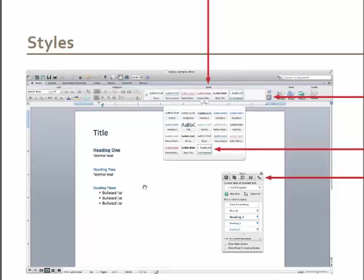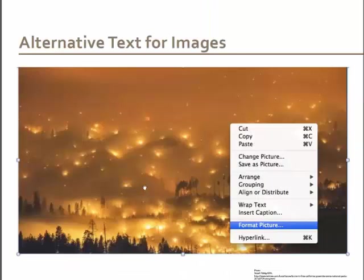Remember when you used to highlight text, bump it up two points, then highlight the next one and do it again? You don't have to do that anymore. You just do it once and you're going to save yourself half an hour. So start using your styles, get comfortable with that, and then you're going to jump into adding alt text for your images. Once you get comfortable with Styles, we're going to start layering other things onto your document.